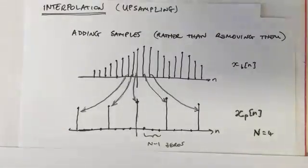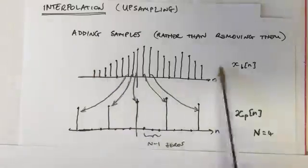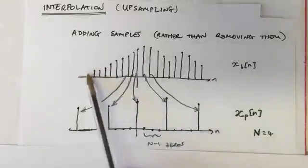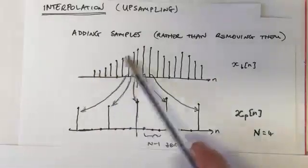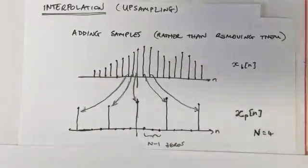A good example to think about is an image where you've got a photograph, for example, and this might be one row of the pixels, and this is the intensity of those pixels.